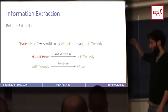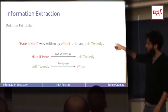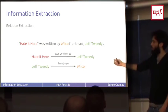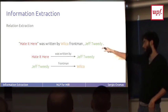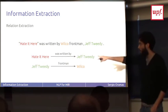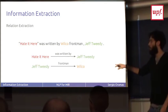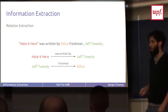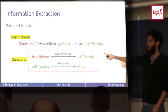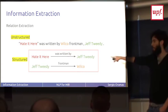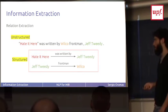This entity linking is the building block of most of the work we are going to explain in this tutorial. Another step in information extraction is called relation extraction. That means we have several entities in a sentence and we want to extract the relation between the entities that is written in the sentence. Here it's very straightforward: 'Hated Here was written by' - this is a relation. This is what makes it easy for computation in a computer.